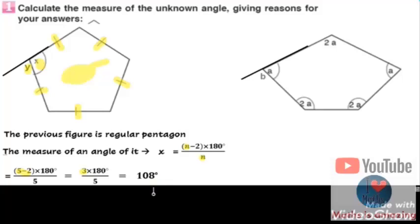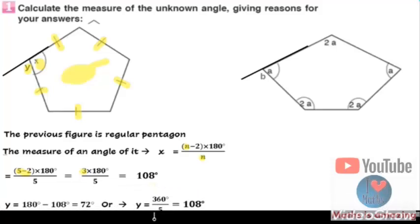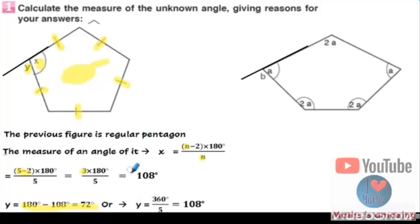To find y, we know that x and y are supplementary angles, so we can find y by 180 minus 108, which equals 72 degrees. Or we have another solution: because we know the sum of all exterior angles is 360, then y equals 360 divided by 5, the number of sides, which also equals 72 degrees.